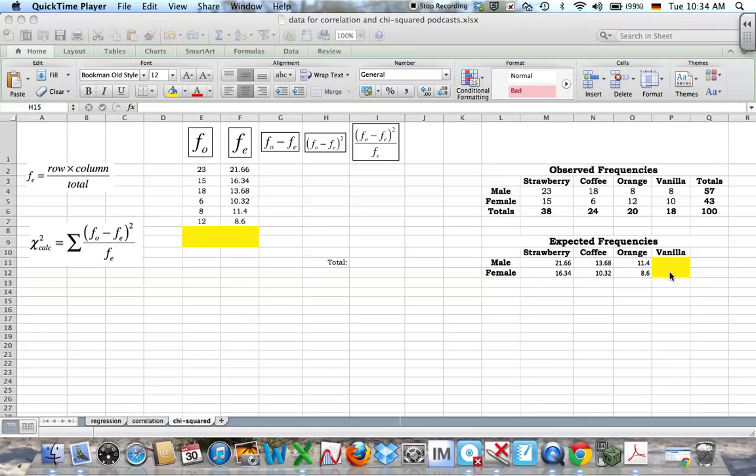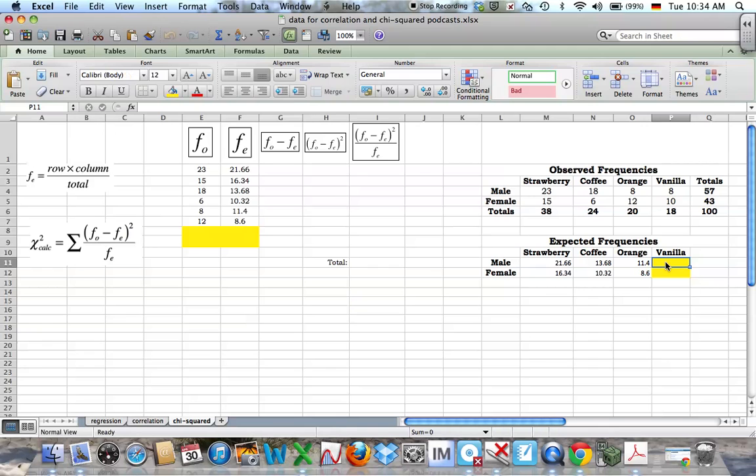I need to just fill these two out. I've left them blank just so you can see where they came from. As a reminder, here's your little rule for the expected frequencies. So if I want to work out the expected frequencies for males who like vanilla,